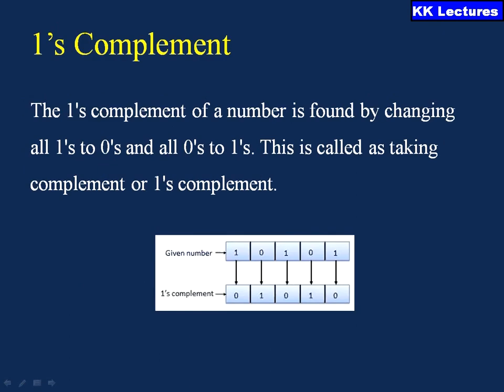Now let us see what exactly the 1's complement is. As defined, the 1's complement is an example of R minus 1's complement. If each and every digit of the given number is subtracted from all 1's, the resultant is called the 1's complement. Another way to express this: for a given number, changing the 1's to 0's and the 0's to 1's gives the 1's complement.